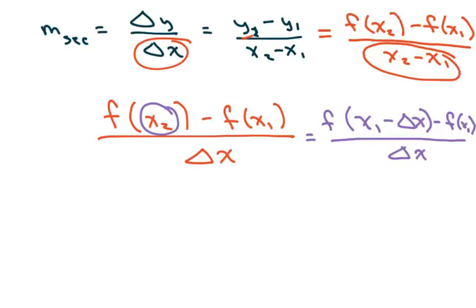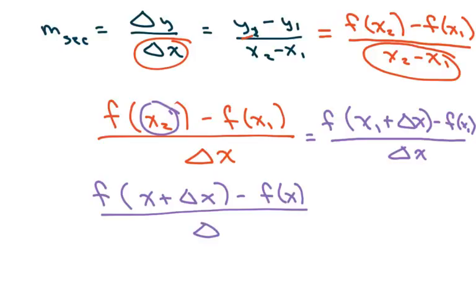Now, since we don't have X sub 2 anymore, because I rewrote this part, I'm just going to take off the X sub 1 and just put X. So it's minus, it's actually plus, sorry, this was a plus. So X plus change of X minus F of X over change in X.